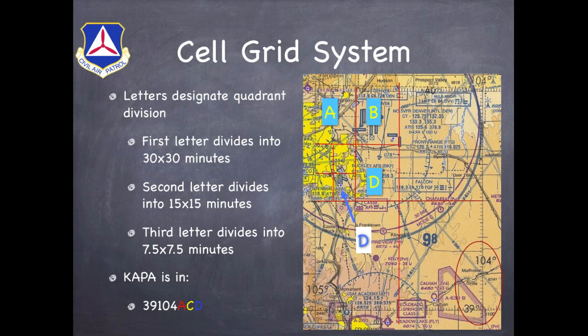Note that you don't actually have to use all three letters at the very end of this designator. In some cases, you actually want to supply the aircrew or the ground team with a larger area — either that 15 by 15, 30 by 30, or sometimes even that full one-degree by one-degree grid. In that case, you would simply look at 39104 Alpha Charlie, and that would block off most of that area over Centennial and downtown Denver.